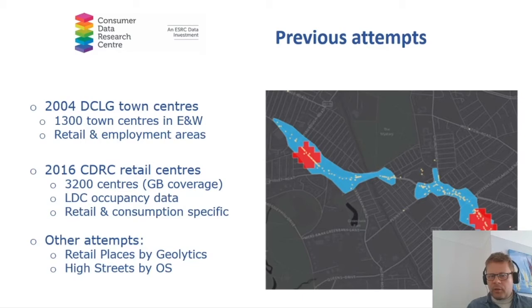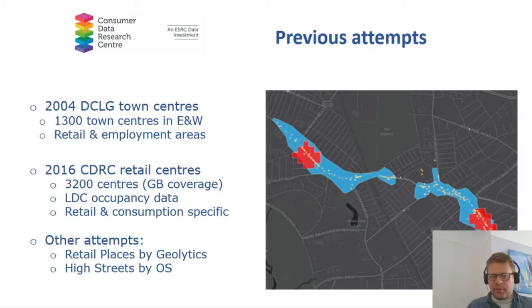However, the extent wasn't that great, which is shown here in red on that map. When we look at, for example, Local Data Company points — retail points shown in yellow — about 50% in some cases are not accounted for, which has obviously significant implications in terms of their characteristics, indicators, and performance. So for that reason, we decided to delineate our own retail centres back in 2014–15, finishing in 2016. We used Local Data Company occupancy data and delineated over 3,000 centres for the entire of Great Britain, and these were retail and consumption specific. As you can see, the extent was much better — it covered pretty much all retail units.